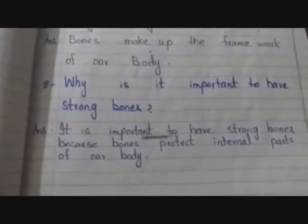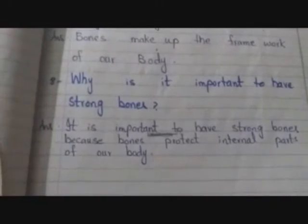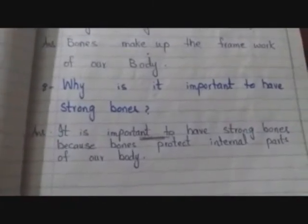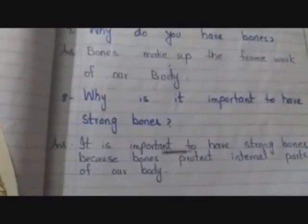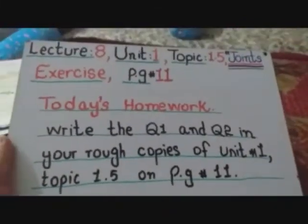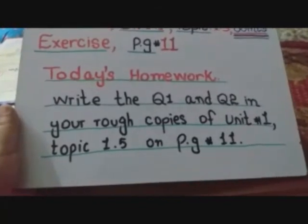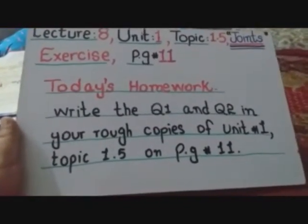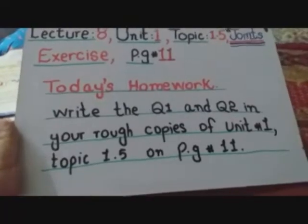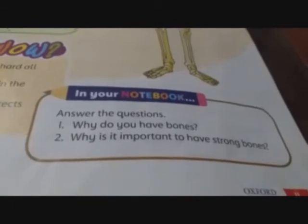Page number 11 پر یہ ہمارے صرف یہی دو questions تھے، تو ہم لوگوں نے اپنی exercise بھی complete کر لی ہے۔ اب آپ اپنا homework note down کریں: آپ نے جو دو questions پڑھے ہیں انہیں اپنی rough copies میں as a practice لکھنا ہے — write question number 1 and question 2 in your rough copies of unit 1, topic 1.5, on page 11, two times تاکہ آپ کی practice بھی ہو جائے اور آپ کو یاد بھی ہو جائیں۔